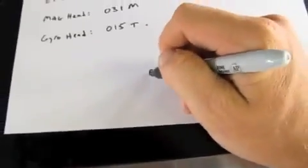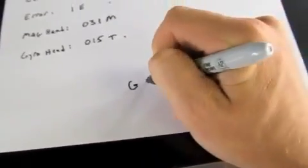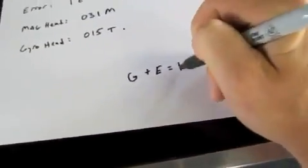So our true course is 016. Now we're going to check that, and always remember the phrase G-E-T, get, to calculate true courses.